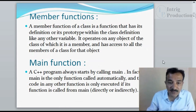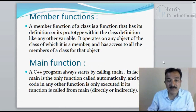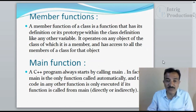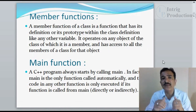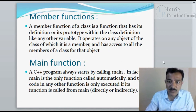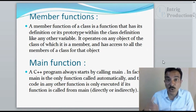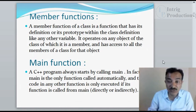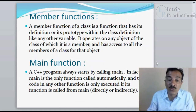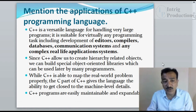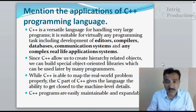The main function: a C++ program always starts execution from the main function. Main is the only function called automatically — it is the first function that executes. Any other function is only executed if it is called from main. All other code runs only when its function is called from the main function.